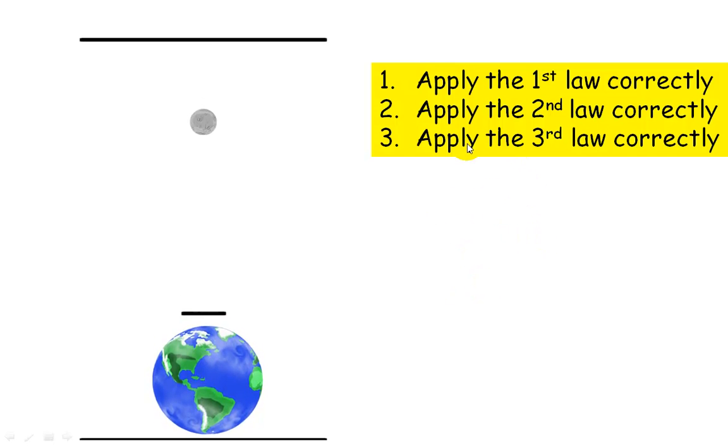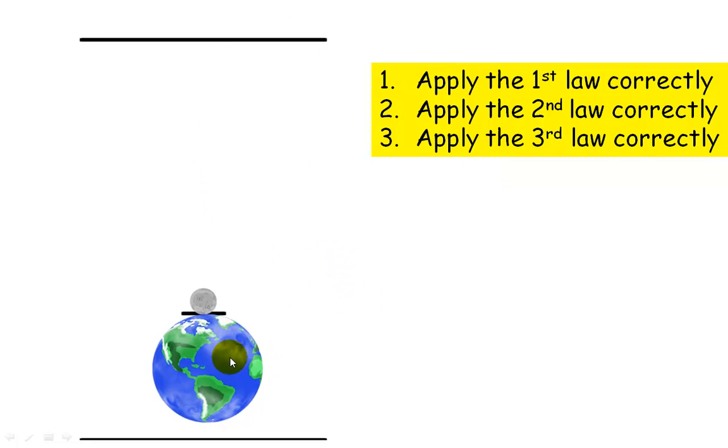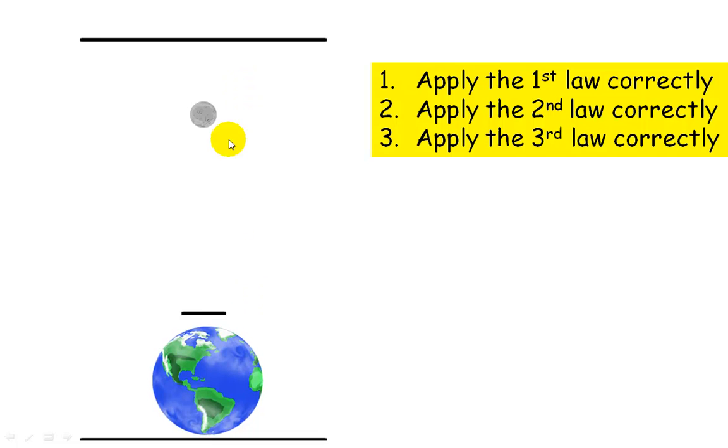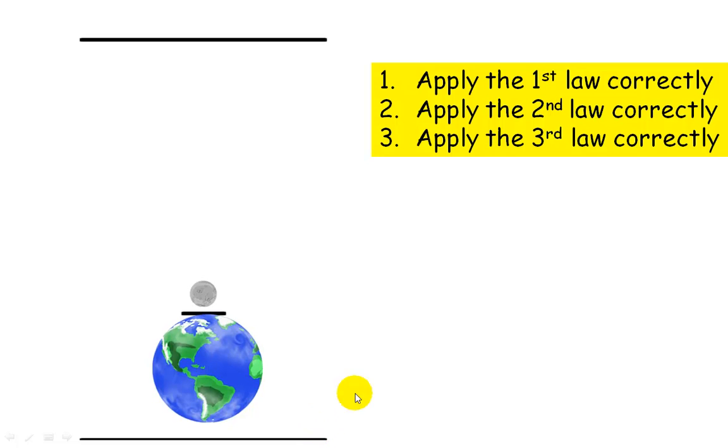Let's see if we can apply Newton's Three Laws of Motion to this image here. We've got a picture of the Earth and the Moon, and they seem to be falling towards each other. These black lines are just reference lines.